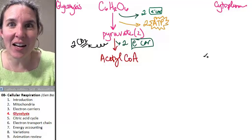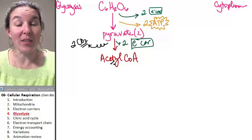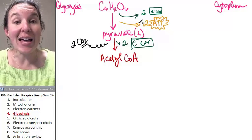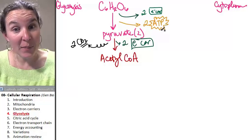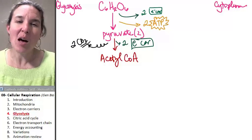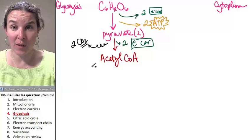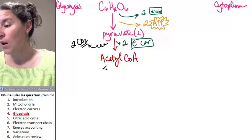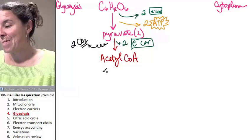So at the end of glycolysis, we end up with acetyl-CoA, which is ready to go into the next process. We have two molecules of ATP and a total of four electron carriers. Plus, we've gotten some of the carbon dioxide that is released in the whole process.